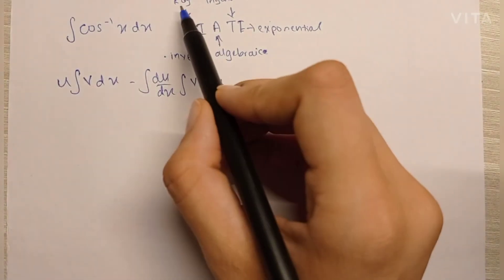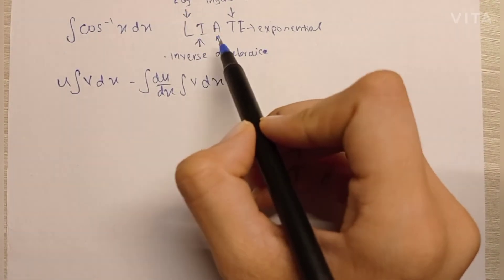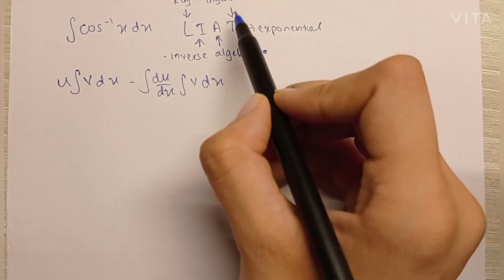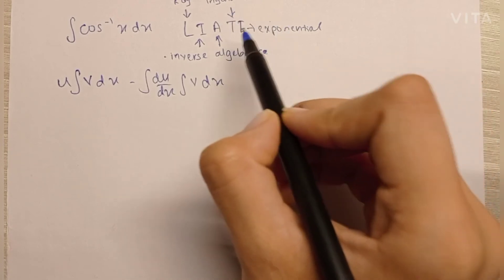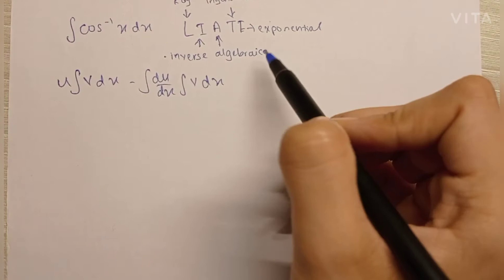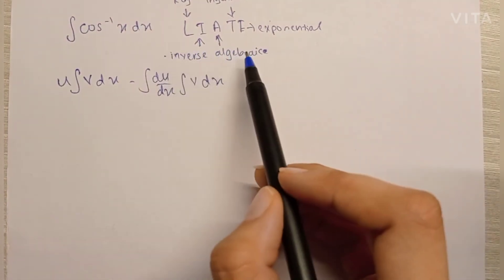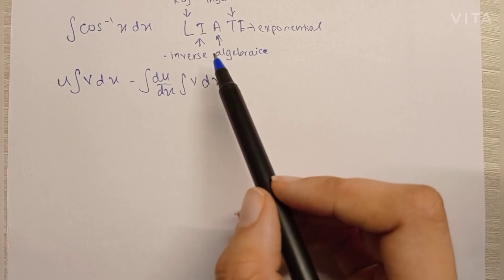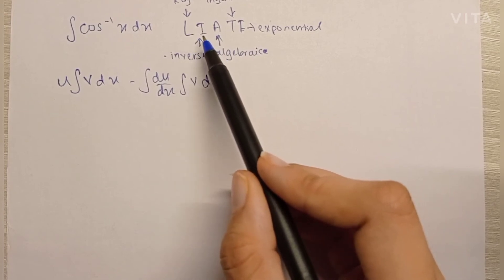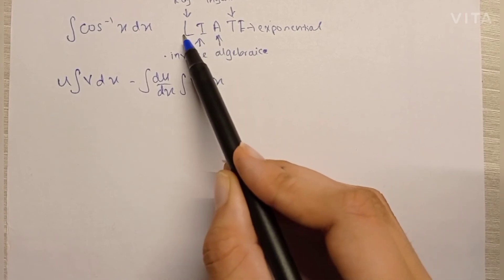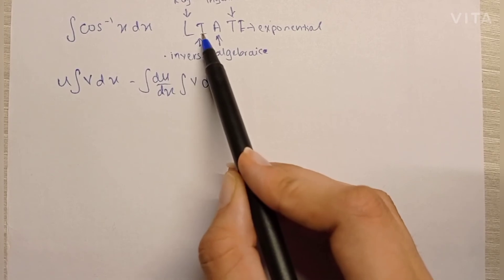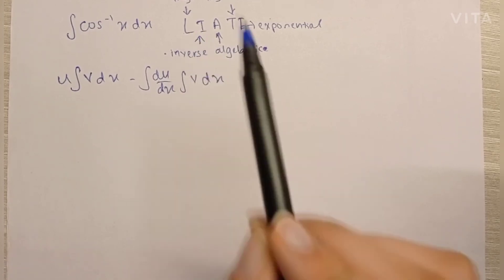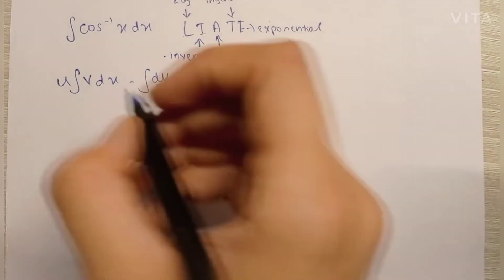L stands for logarithm, I stands for inverse trigonometric, A stands for algebraic, T stands for trigonometric, and E stands for exponential. This is the order of preference for the u term. So if I have a log term and an inverse trigonometric term, I would keep the log term as u and the inverse trigonometric term as v, because L comes before I in the LIATE rule.